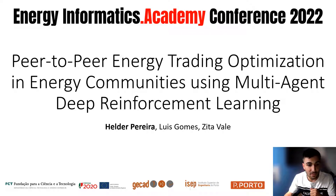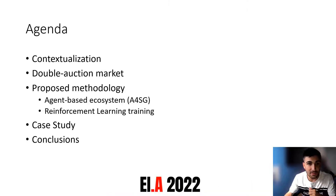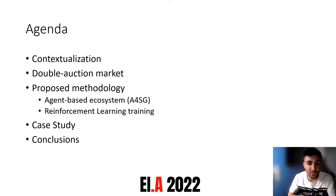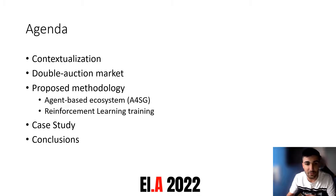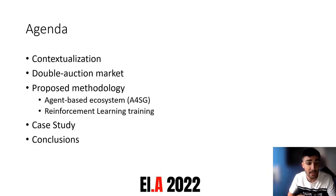To start, I will talk about the agenda. I will begin with the contextualization, then discuss the peer-to-peer model we used — the double auction market — then explain the proposed methodology, which has two main topics: the agent-based ecosystem and the training of the reinforcement learning models. Finally, I will present the case study and the main conclusions.